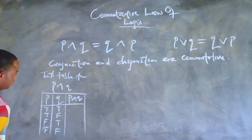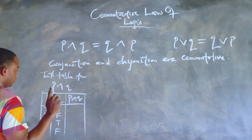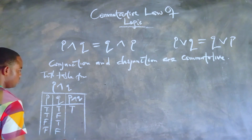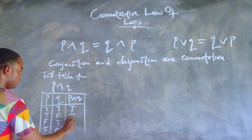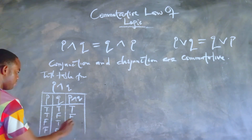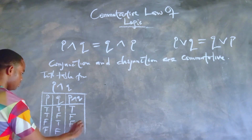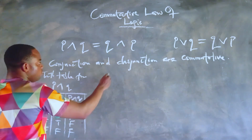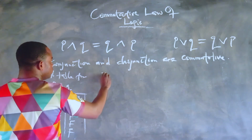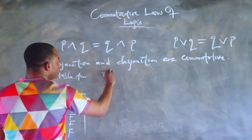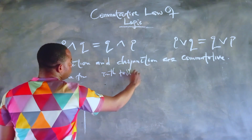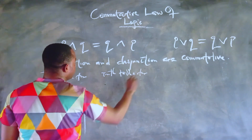Let's go and see the AND statement for P and Q. For the AND statement, both statements need to be true, or else the truth value for the compound statement is false. As you can see, for all the three other conditions, either one of the statements is false, so the truth value is false.